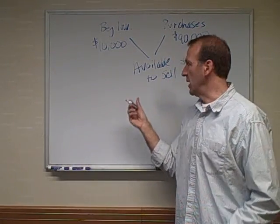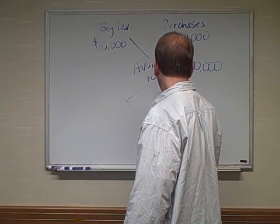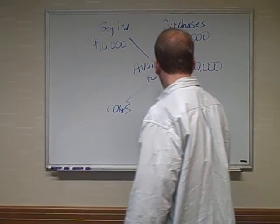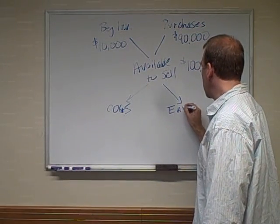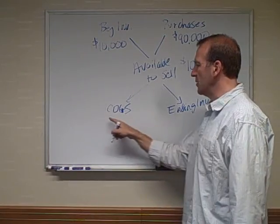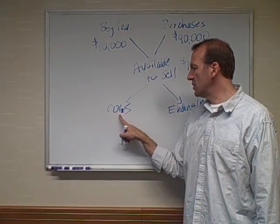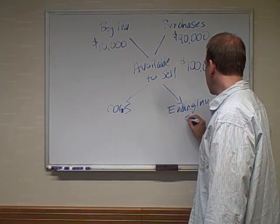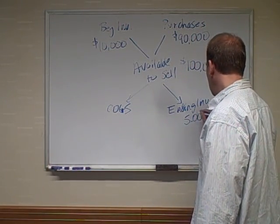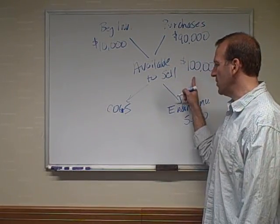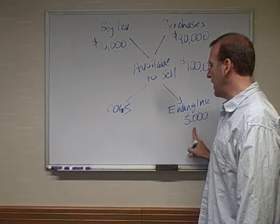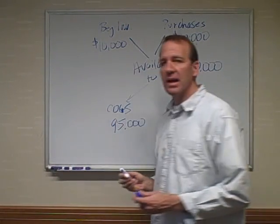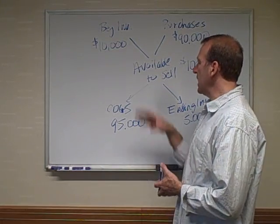Now we either sold the inventory, which would be cost of goods sold, or we still have it as ending inventory. COGS stands for cost of goods sold. Let's say in ending inventory we have $5,000 left. If we had $100,000 available to sell and we have $5,000 left, that means cost of goods sold must be $95,000. You see, if I take any one of these numbers out but leave all the others, you could back into the other number.